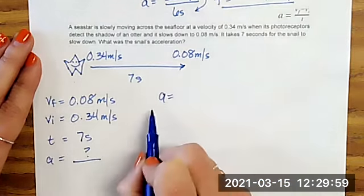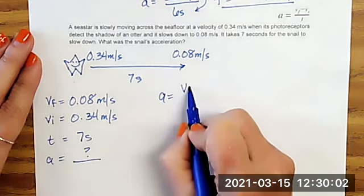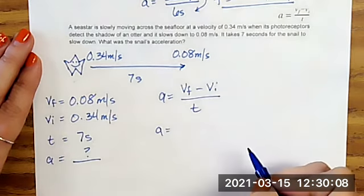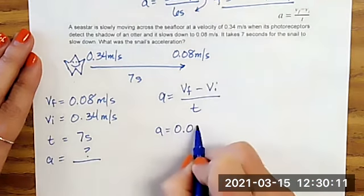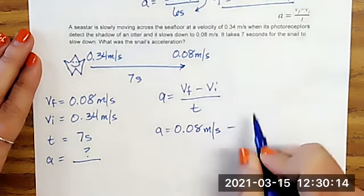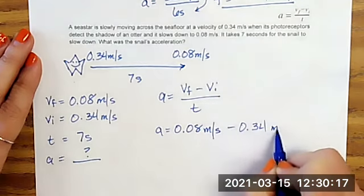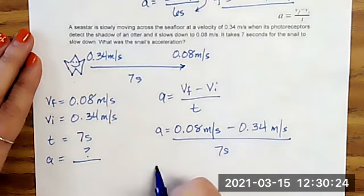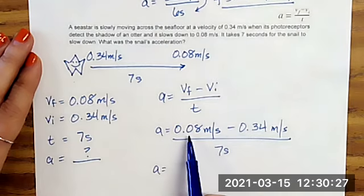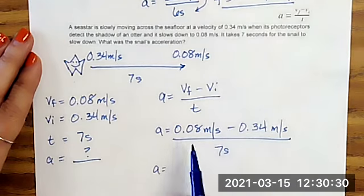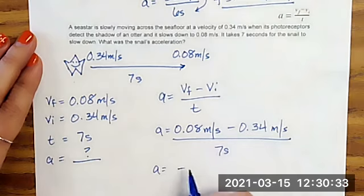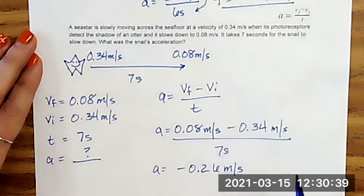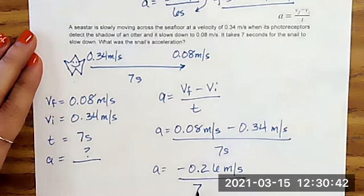So since we're solving for the acceleration, we're just going to write the formula as velocity final minus velocity initial over time. Now I plug in my variables and their units. So velocity final minus velocity initial over time. Now I can start to do the math. So I'm going to take 0.08 subtract 0.34. So when I do the math, I get a negative 0.26 meters per second because my unit doesn't change when I add or subtract over seven seconds.